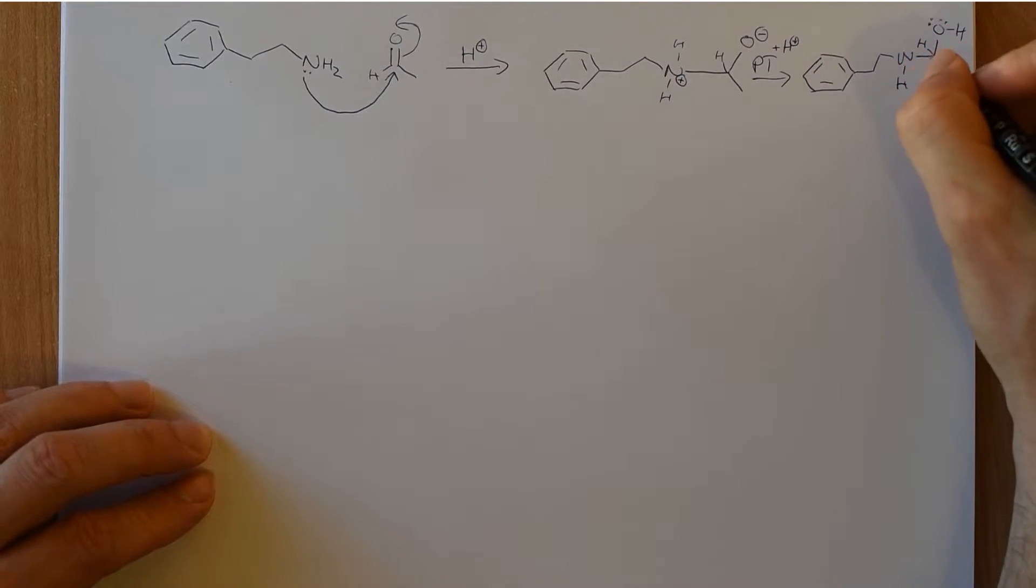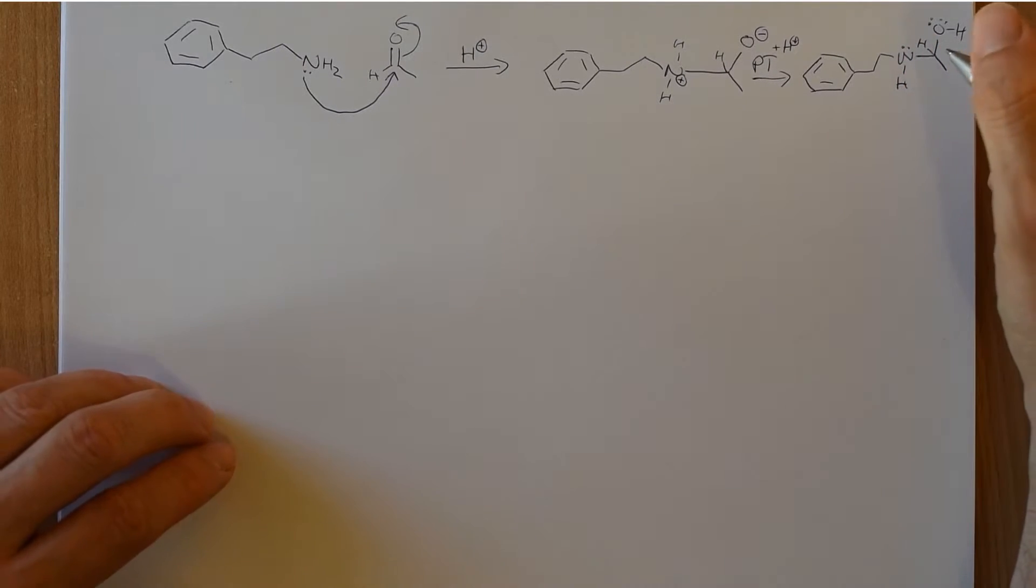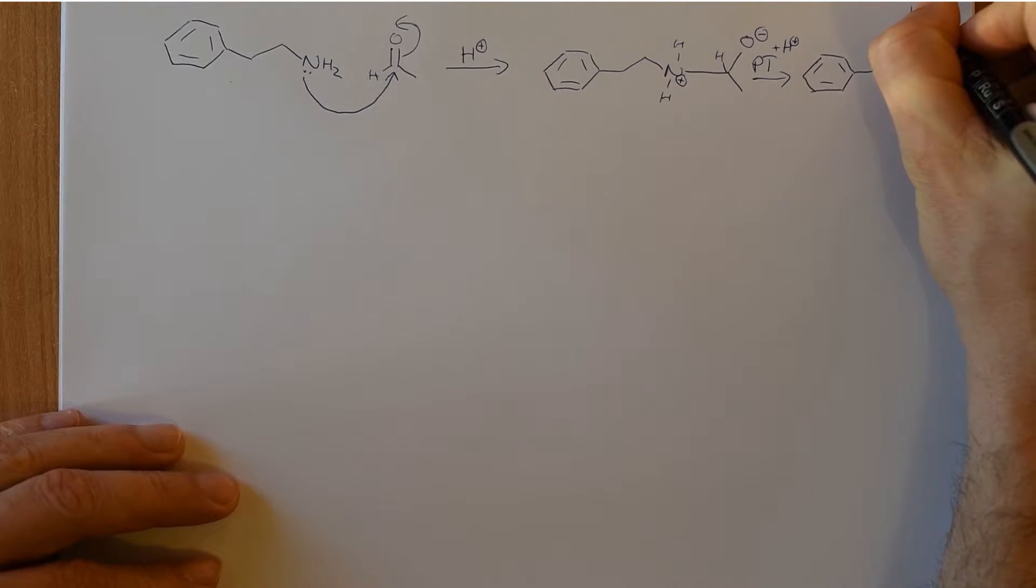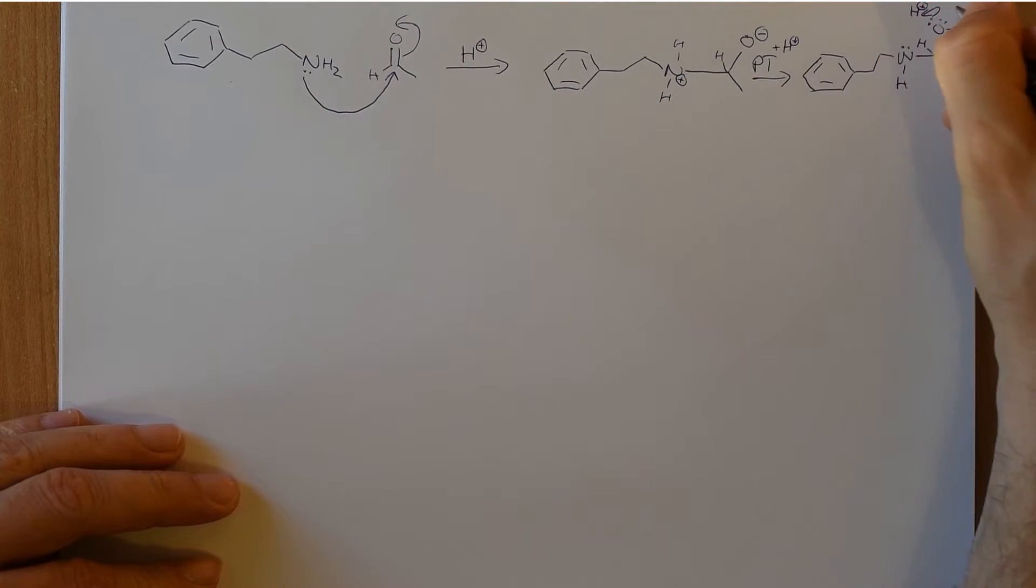So this is a classic situation. Here we have a tetrahedral intermediate. There are two possible leaving groups. So two hetero atoms that are capable of leaving, the nitrogen or the oxygen. And whichever we protonate is going to become the leaving group. We want the oxygen to leave. So let's protonate that oxygen.